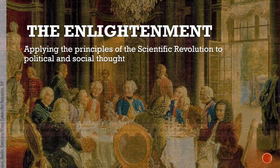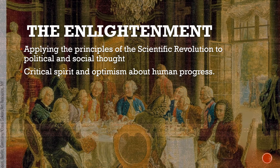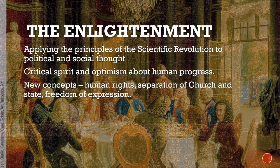If the Scientific Revolution challenged long-held assumptions about the universe, the natural world, and the human body, the Enlightenment challenged long-held assumptions about society. Why do we have kings? Are they necessary? Why are some people born with special privileges as nobles — is that fair? Are all people actually equal? Throughout the Enlightenment, we see new concepts emerge: human rights, the separation of church and state, and freedom of expression — ideas we still hold dear in the Western world.